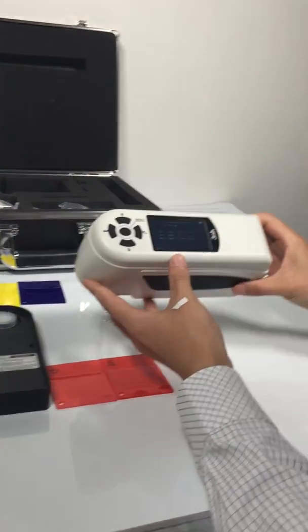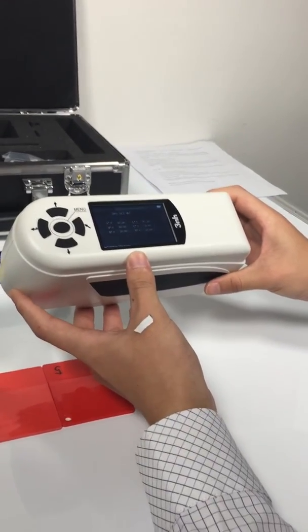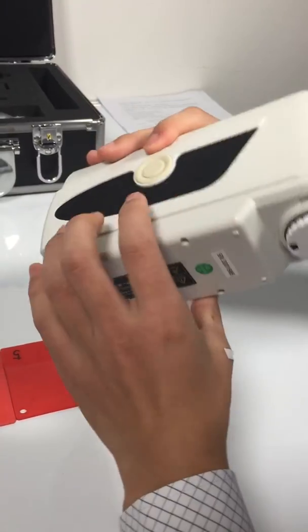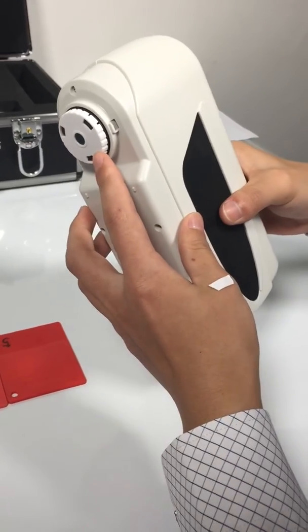This is the colorimeter NH300. Here's the power switch, the memory button, and the memory aperture.